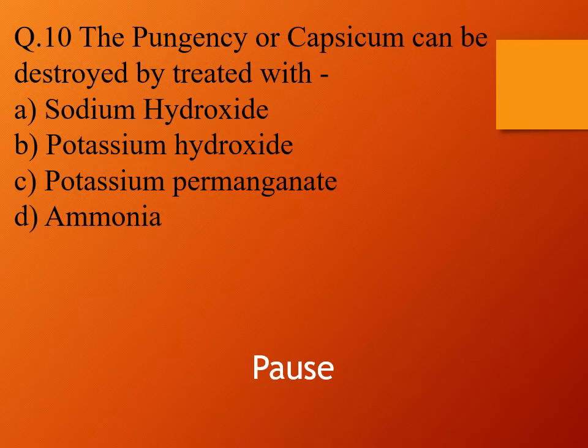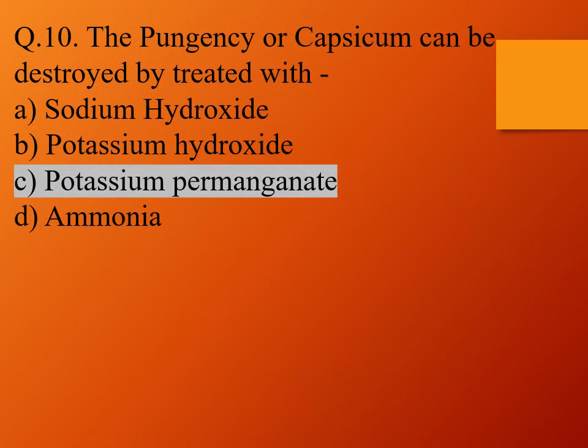Question 10. The pungency of capsicum can be destroyed by treatment with: option A, sodium hydroxide; option B, potassium hydroxide; option C, potassium permanganate; and option D, ammonia. The right answer is potassium permanganate. So the pungency of capsicum can be destroyed by treatment with potassium permanganate.